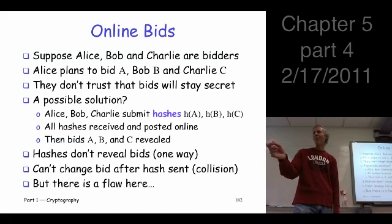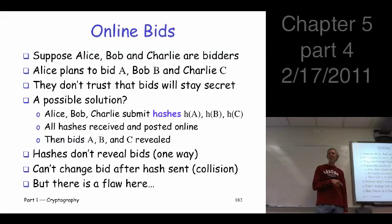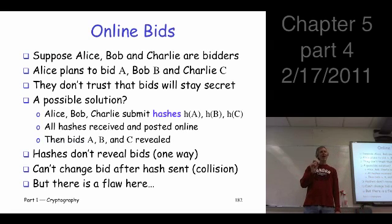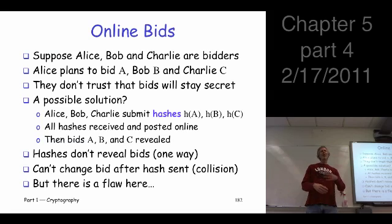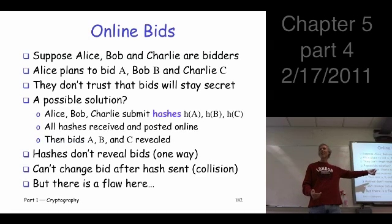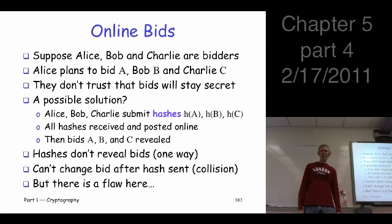There is a problem with this though — a forward search attack. If you see the hash of A, it's a one-way function so you can't directly figure out A. But what are the possible bids? Maybe reasonable bids are $1,000 to $2,000. You can hash all possible values between $1,000 and $2,000, even to the cent — that takes a fraction of a second. If any match H(A), you know Alice's bid. That's a forward search attack, very analogous to what we saw with public key systems.